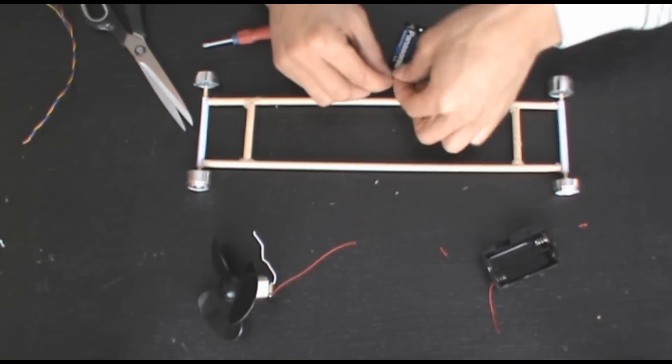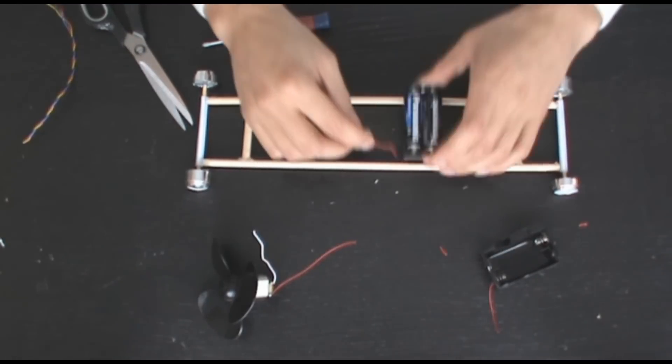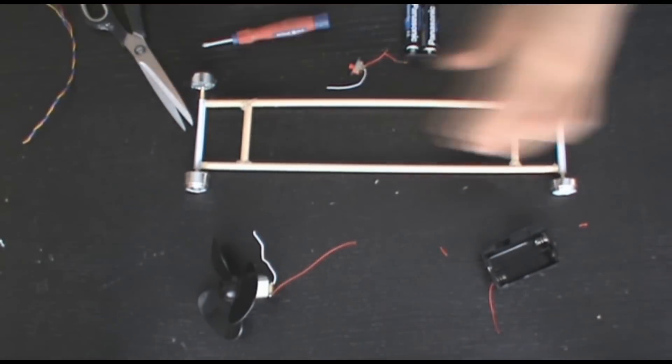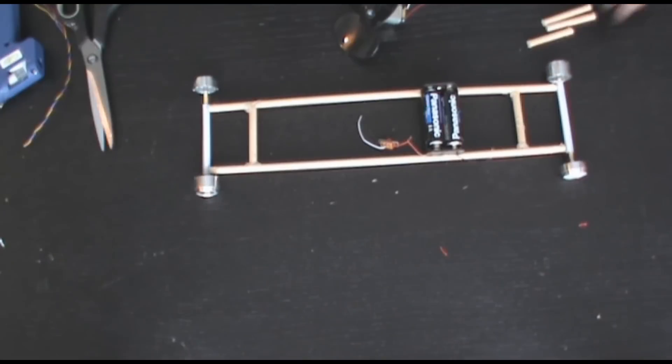Now I'm just going to attach the wires to this battery pack. And now the wire from the battery pack attaches to the switch. Now I can glue the battery pack down.